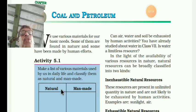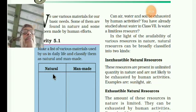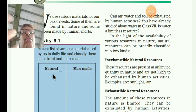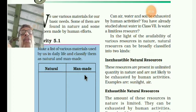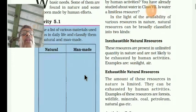Dear students, you know what we mean by nature — things you get easily from nature itself, like air, water, minerals, coal, petroleum. And man-made means made by human beings — bench, chair, table, or even plastic buckets.